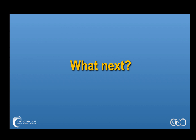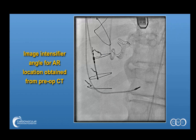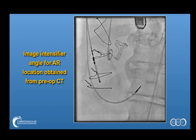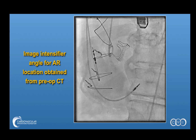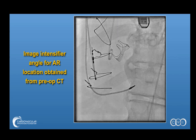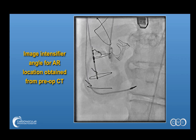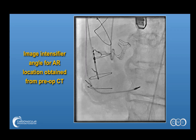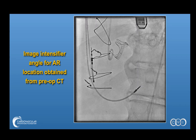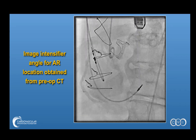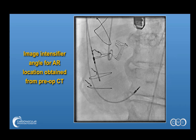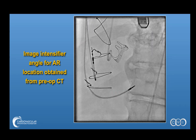You can think about how you would approach this from a transcatheter standpoint, and over the next several slides I'm going to show you how we did it at our hospital. The first thing we did is obtain a CT study that allows us to locate the defect exterior to the aortic valve prosthesis, so that we can then use the image intensifier to find the appropriate angle to engage the defect.